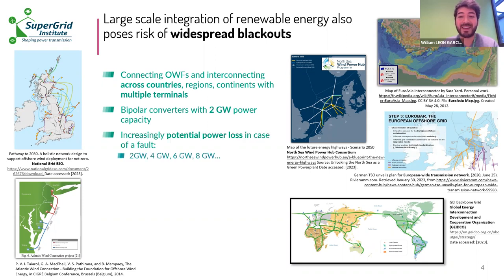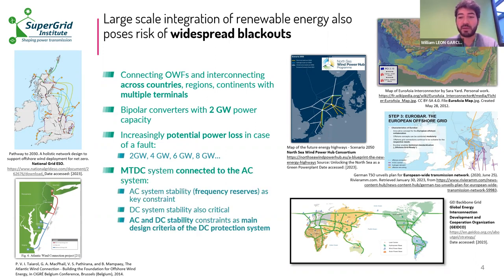We're now talking about increasing the number of terminals and power in what we call a multi-terminal HVDC system. Since the power increases, so does the risk of a fault, leading to a potential sudden loss of two, four, six gigawatts or more. With increasing scale and complexity, we must consider the risk of widespread blackouts. The MTDC system is connected to the AC system as well, so the stability of both systems is crucial. Currently grid codes specify rules to maintain AC network stability, but these rules are limited to each country, so we need better knowledge on DC side security constraints.